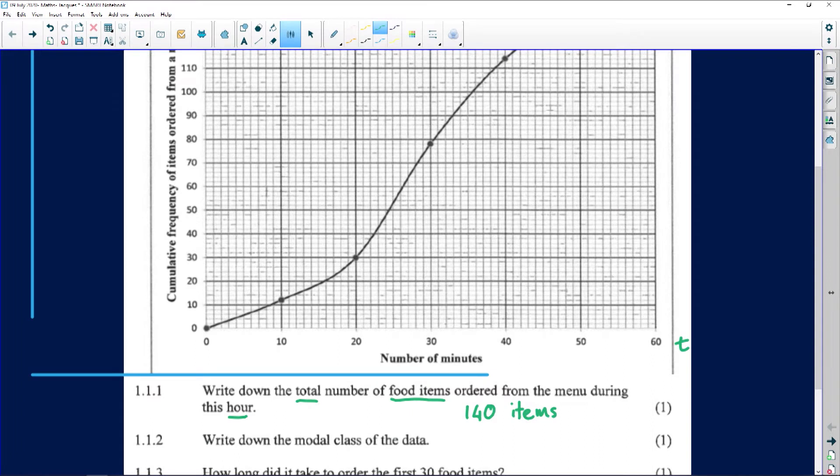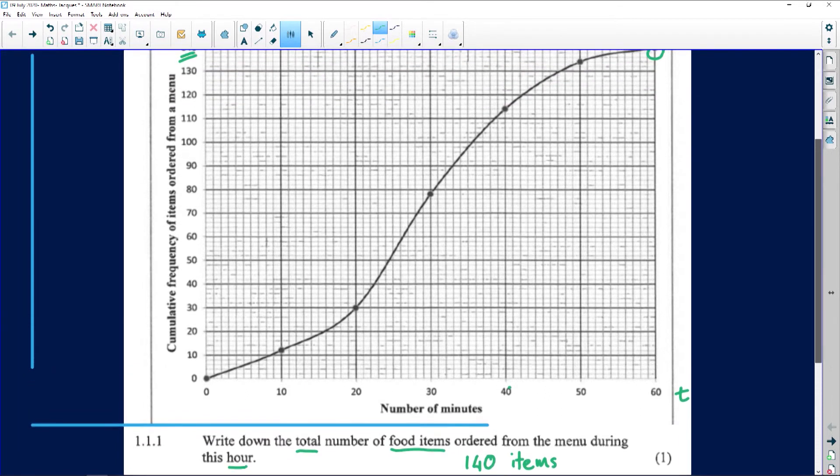Okay, now the next question is asking us about the modal class of this data. Now that is where most, the period on this graph, where most of the sales happened. So let's have a look. Our graph has been subdivided into intervals of 10 minutes. Over here, 12 items were sold. The next 10 minutes, we sold an additional few items to reach a cumulative amount of 30.